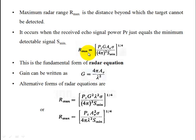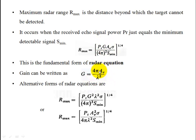The maximum range formula is: r⁴ = PtGAeσ / [(4π)² × Smin], giving Rmax = [PtGAeσ / ((4π)² Smin)]^(1/4). By replacing Ae or G using antenna relationships, these are the alternative forms of the radar equation.